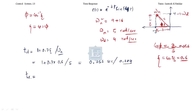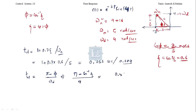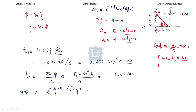For rise time tr = (π − cos⁻¹(ζ))/ωd = (π − cos⁻¹(0.6))/4, which gives approximately tr ≈ 0.55 seconds. For the maximum peak overshoot, the formula is e^(−ζπ/√(1−ζ²)) × 100, which gives approximately 9.4%. This is given in percentage, so the answer is 9.4.